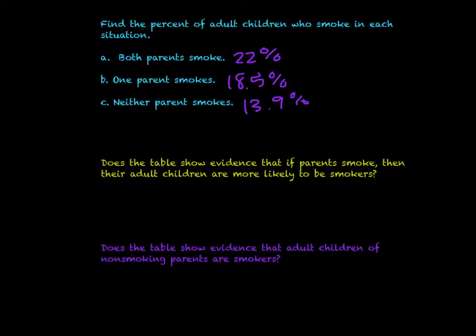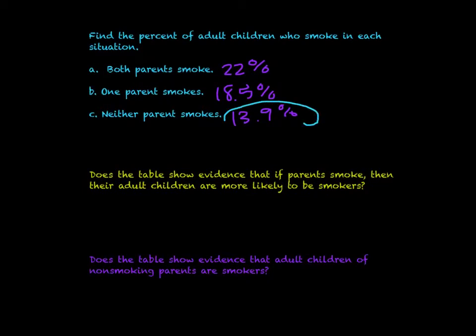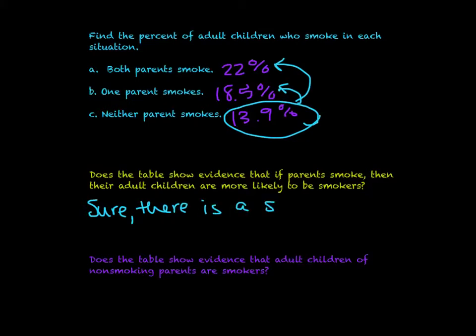Does the table show evidence that if a parent smokes, their adult children are more likely to be smokers? We're comparing the 14% for no-parent-smokers against the 22% and 18.5% for one or both parents smoking. If you don't have any parents that smoke, there's about a 14% chance you'll smoke. Whereas if you have both parents or one parent who smokes, it's a 22% or 18.5% chance. Is that enough of a difference? Yes — 8% is quite a bit.